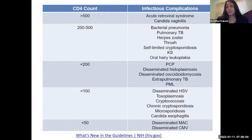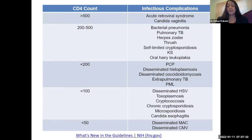When you're less than 200, you get pneumocystis pneumonia due to Pneumocystis jirovecii, disseminated fungal infection due to histoplasmosis and coccidioidomycosis, extrapulmonary TB, and progressive multifocal leukoencephalopathy due to JC virus — a double-stranded DNA virus. As you get lower, less than 100, you see disseminated HSV infection, CNS toxoplasmosis, cryptococcosis, chronic cryptosporidiosis, microsporidiosis, and candida involvement of the esophagus. Below 50, you see disseminated Mycobacterium avium complex and disseminated CMV infection.